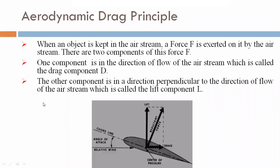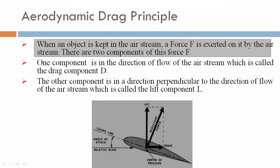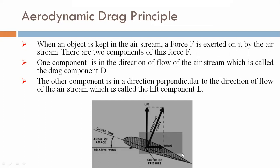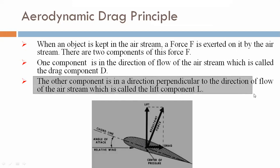Now we will discuss the aerodynamic drag principle. When an object is kept in the air stream, a force F is exerted on it by the air stream. There are two components of this force F. One component is in the direction of flow of the air stream, which is called the drag component D. The other component is perpendicular to the direction of flow, which is called the lift component L.